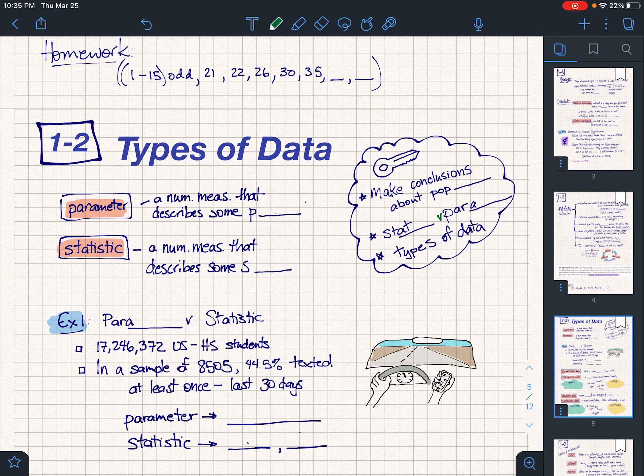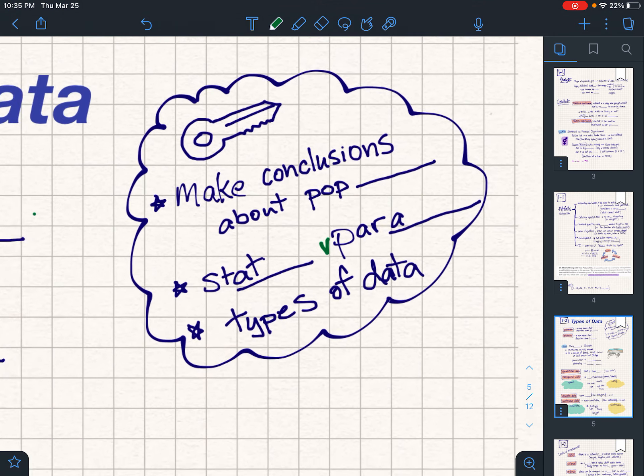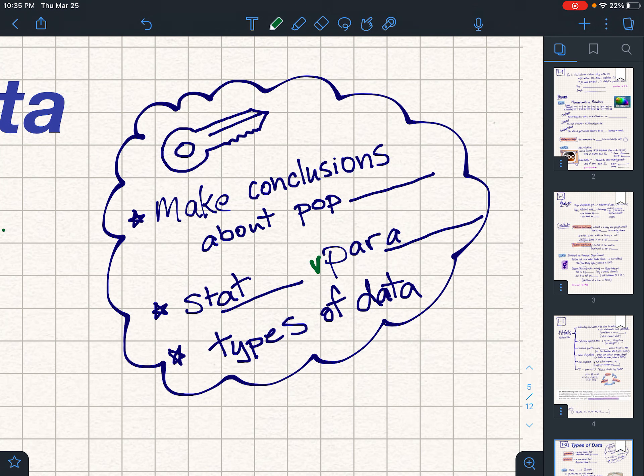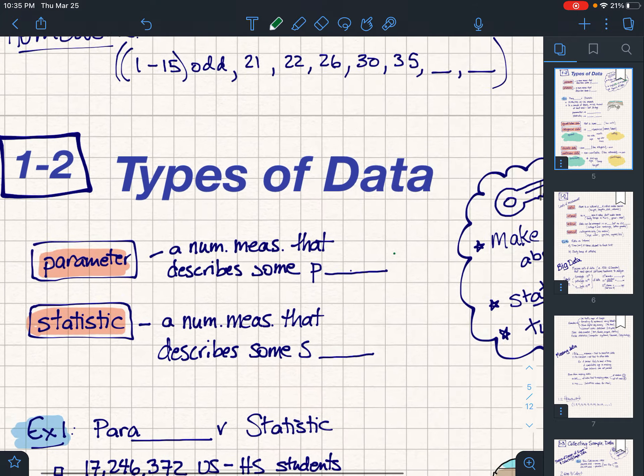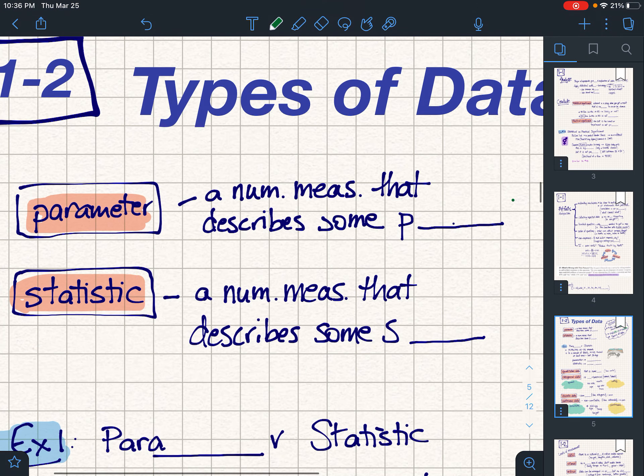All right kids, here we go. Lesson one, two types of data. Our main ideas here are making conclusions about populations, finding different types of data, but mainly one of the key ones is looking at a statistic versus a parameter. So we'll start off looking at that first idea there. What is the difference between a parameter and a statistic?